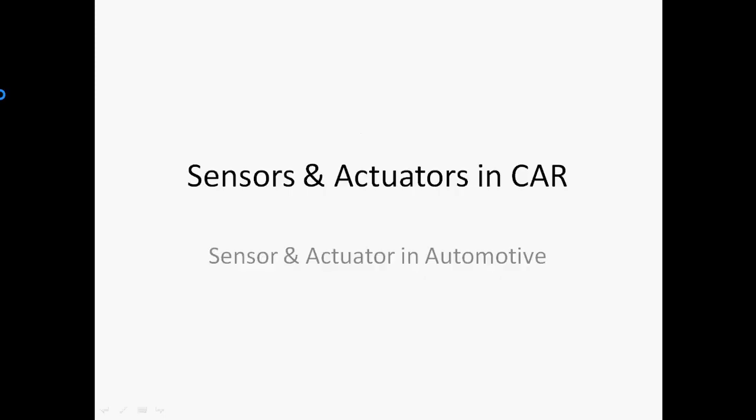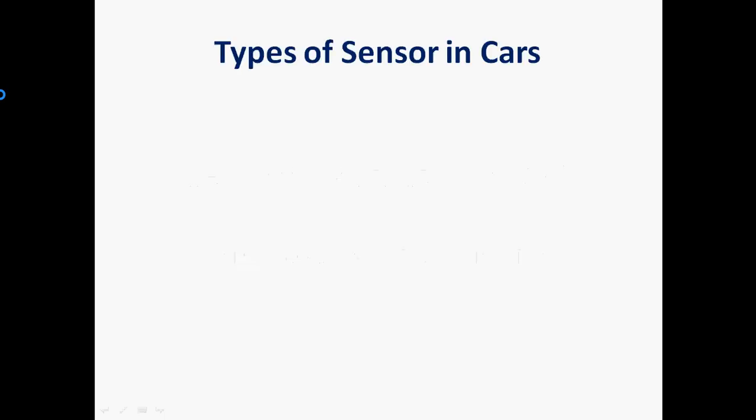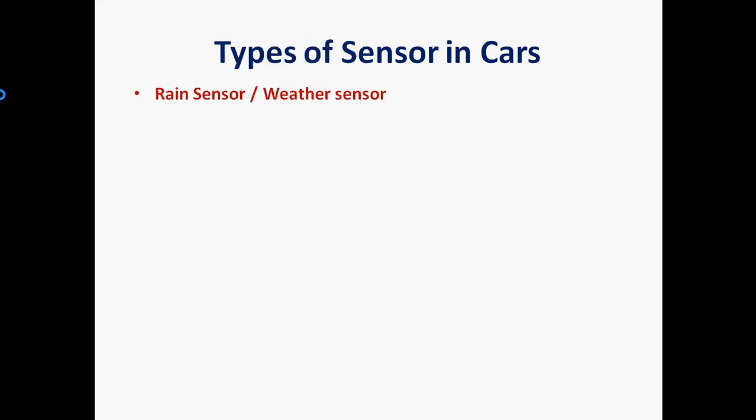The agenda of this tutorial is sensors and actuators in cars — how these sensors and actuators work in automotive. Let's see what the types of sensors are. So far we have a lot of sensors; I have given very few sensors with respect to common cars as well as the advanced technologies implemented in high-end vehicles.